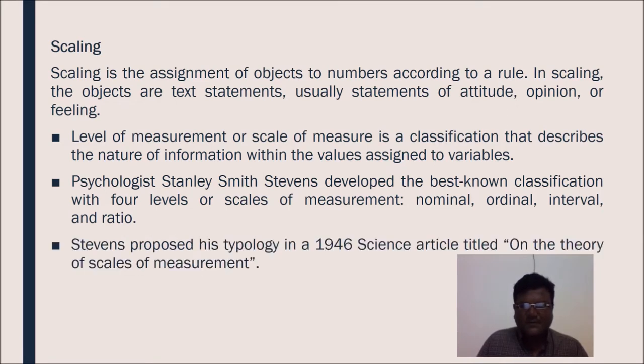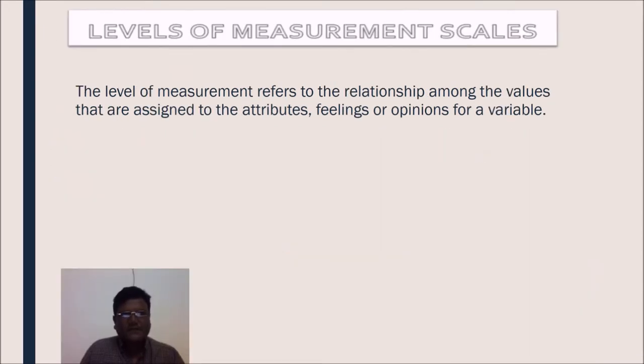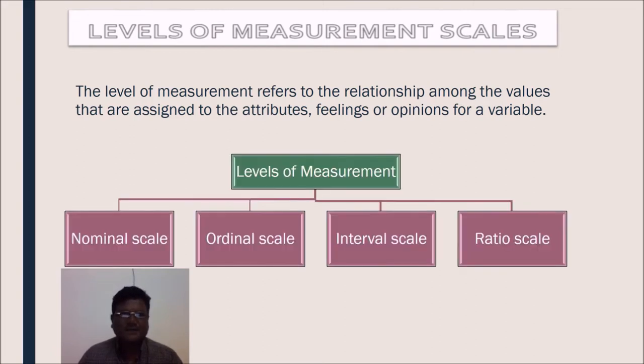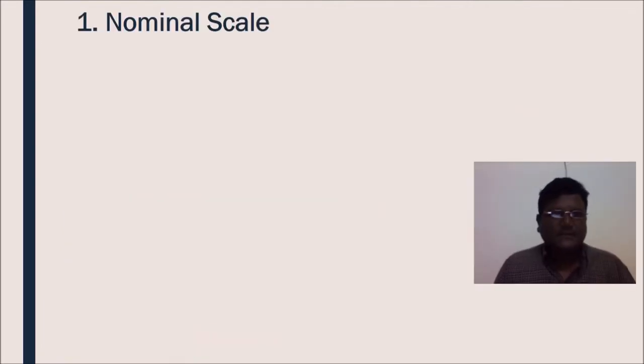Stevens proposed his typology in a 1946 science article titled, On the theory of scales of measurement. Levels of measurement scales - the level of measurement scales refers to the relationship among the values that are assigned to the attributes, feelings or opinions for a variable. There are four levels of measurement, namely nominal scale, ordinal scale, interval scale and ratio scale.